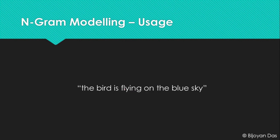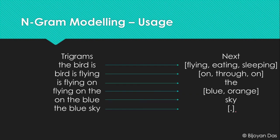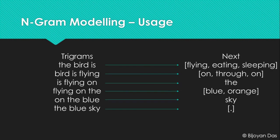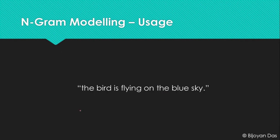'On the blue' is our next trigram and 'sky' is the only word that follows it. Then 'the blue sky' is followed by a full stop. The next trigram would be 'blue sky full stop', and since there is no such trigram in the database, we stop. We have generated the sentence: 'The bird is flying on the sky.' This is our trigram-generated sentence.